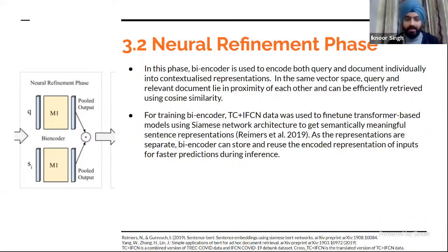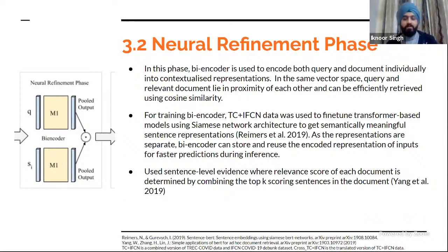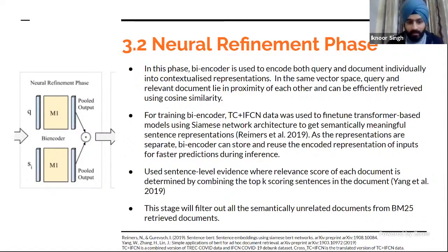We compare at a sentence level rather than the complete document: we extract sentence-level evidence where the relevance score of each document is determined by combining the top-K scoring sentences. This stage filters out all semantically unrelated documents retrieved from the BM25 phase. Also, the bi-encoder can store and reuse encoded representations of inputs for faster prediction during inference.